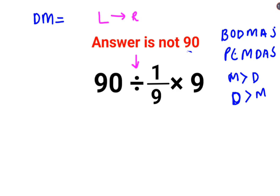So first we'll do 90 divided by 1/9. Whenever you have a division sign, you just have to follow the rule of KCF. K stands for keeping the first number as it is, C stands for changing the division sign to multiplication.